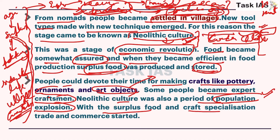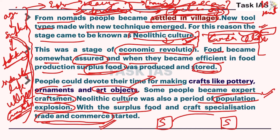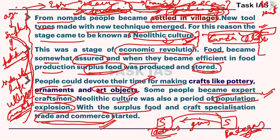With surplus food and craft specialization, trade and commerce also became a must, because if one group had specialization they needed other objects from another specialized group. For example, in contemporary times, Todas - a pastoralist community - have specialization in pastoralism, so they need grains from other communities like Badagas, who are also tribal people in the Nilgiris. They provide milk products to these tribes but in return ask for grains.